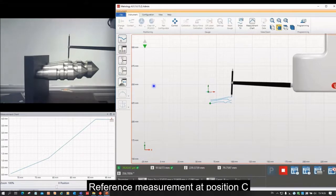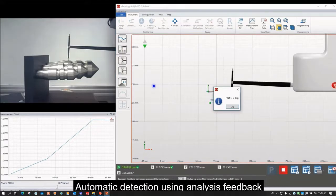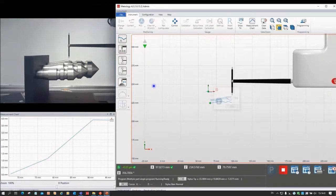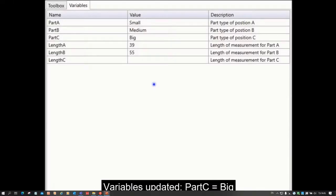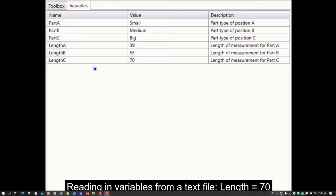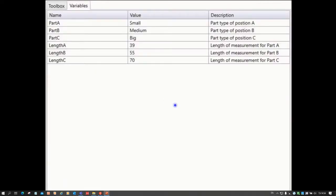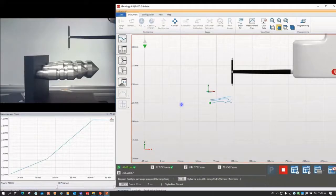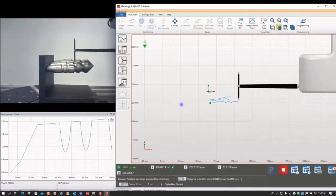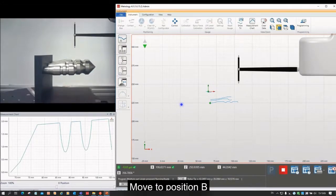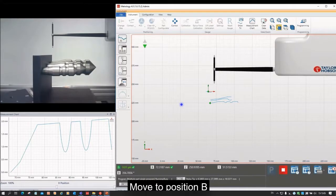And finally for the longer part, it's identified that it's the big part, Part C. And now it goes and reads from the text file, it reads that that is 70 millimeters long. So once it's got all the information about a part or the parts that are being measured, it can then go and measure all of those using one program. So all the details of the parts in our palette or in our fixture are known. So it's now measuring the middle part over the full length, and then finally the larger, the bigger part over 70 millimeters.